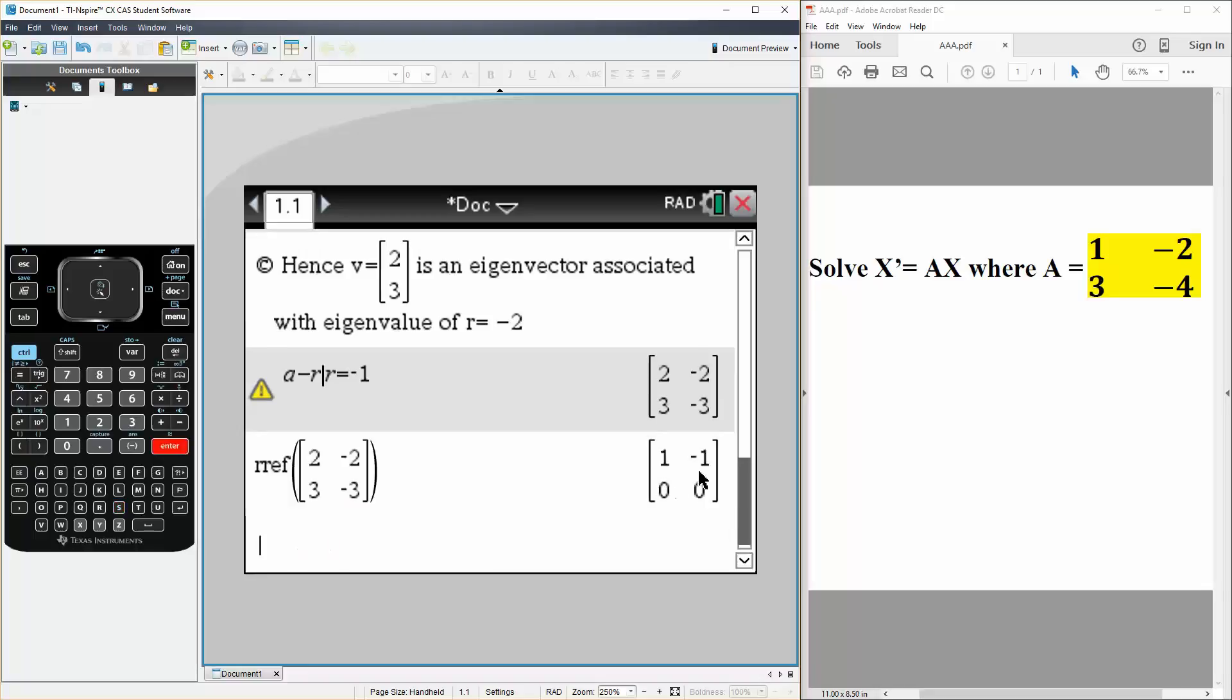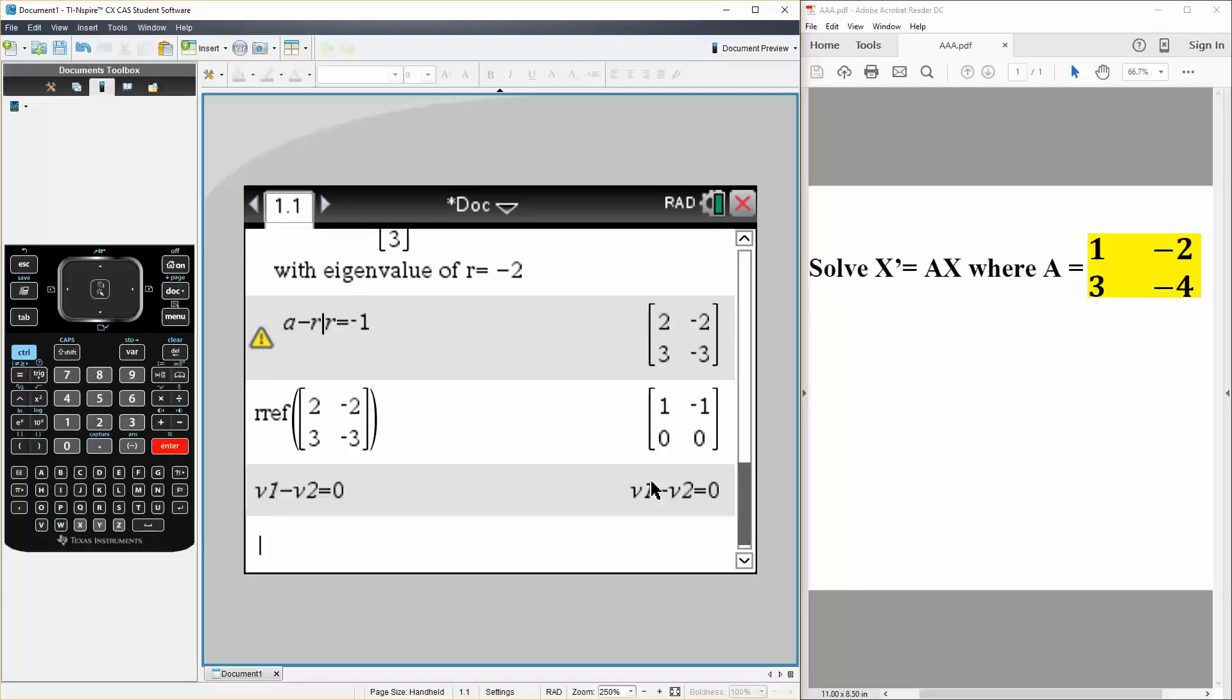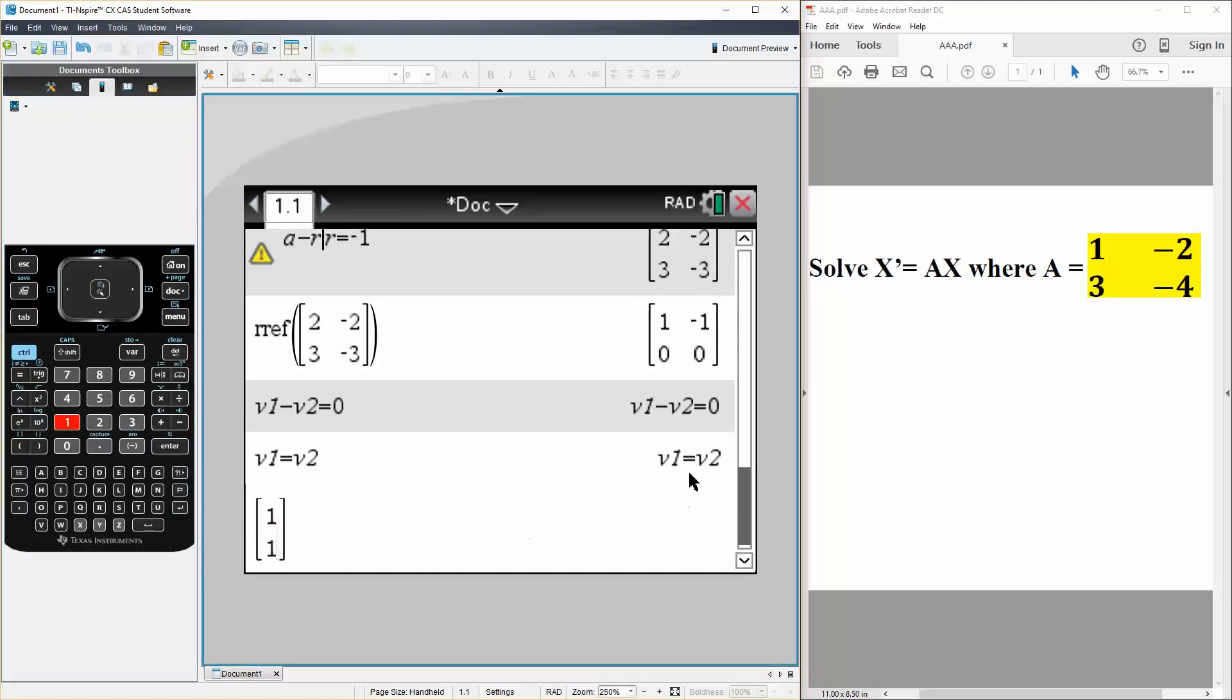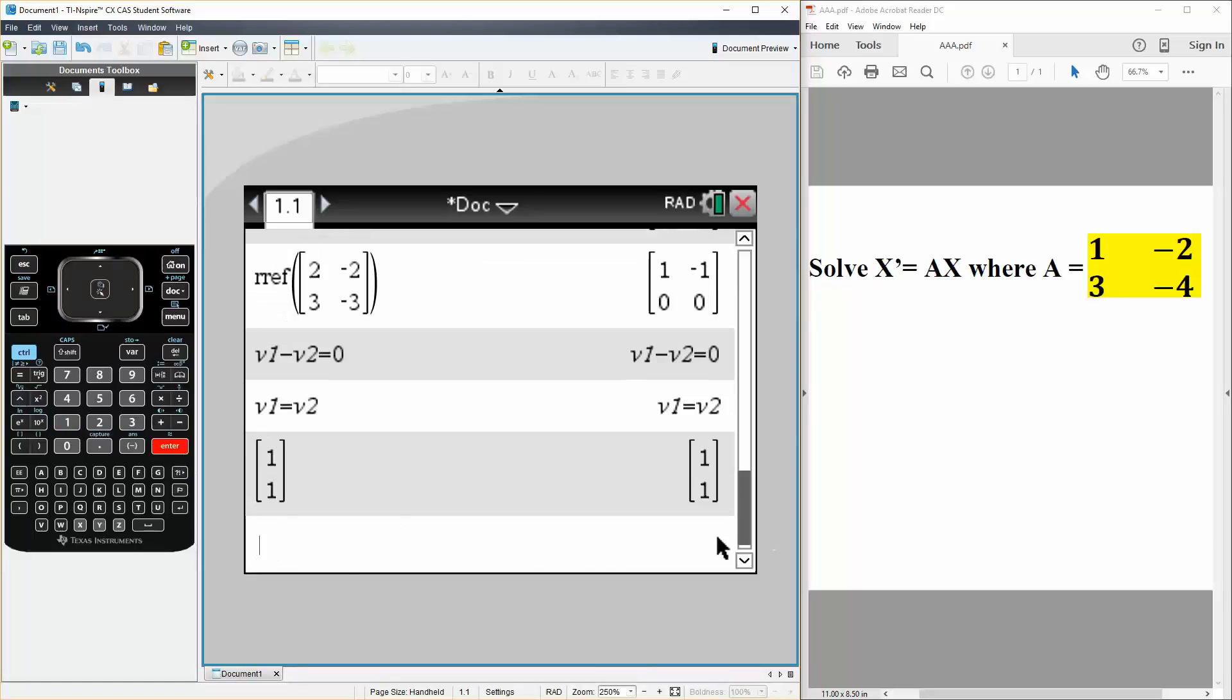And next we do row reduced echelon form of this. We get this value, and so this is saying V1 minus V2 is equal to 0, and so therefore V1 is equal to V2. And that means the eigenvector would be [1, 1], because if V1 is 1, then V2 is also 1, or if V2 is 1, then V1 is also 1.